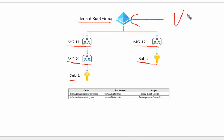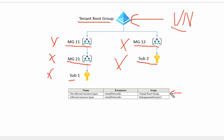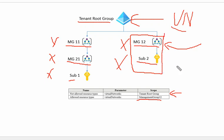Since the 'not allowed virtual networks' policy is applied at the root level, nowhere in any subscription or management group can we create any virtual network. The second policy says 'allowed resource type: virtual networks' and is applied on management group 1.2. So management group 1.2 has this policy applied. This second policy overrides the root-level deny policy for management group 1.2.